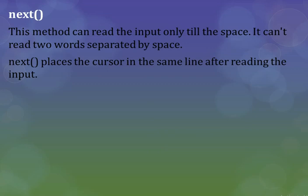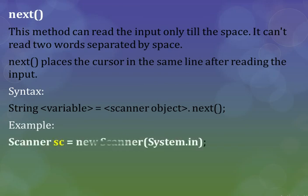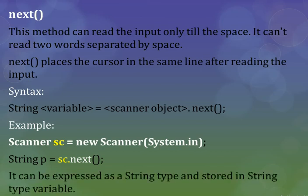The next() method reads a single value on the same line. The syntax is: String variableName = scannerObject.next(); Example: String p = sc.next(); It can be expressed as a string type and stored in a string type variable p.